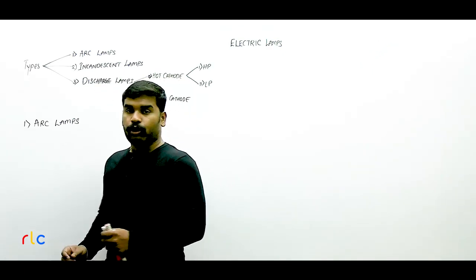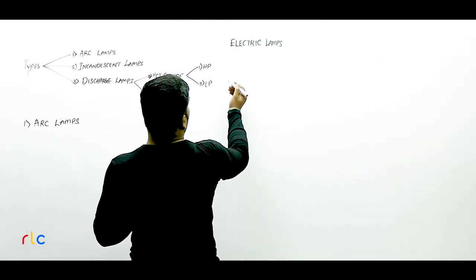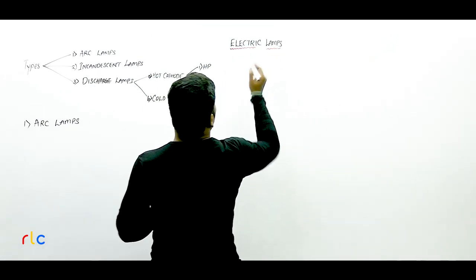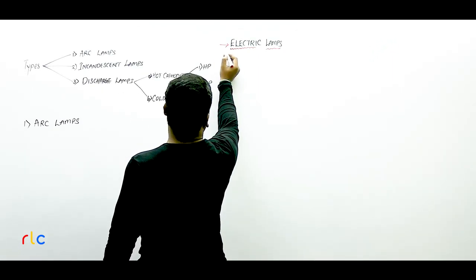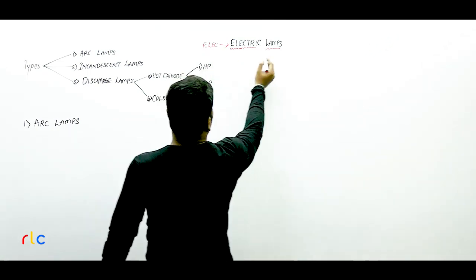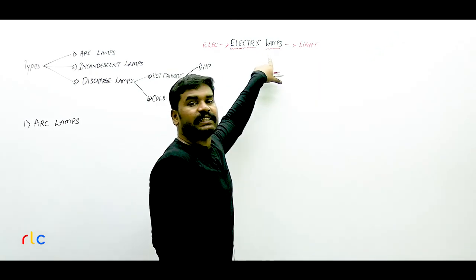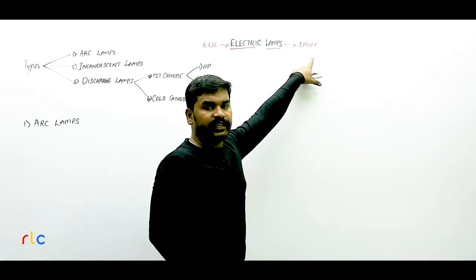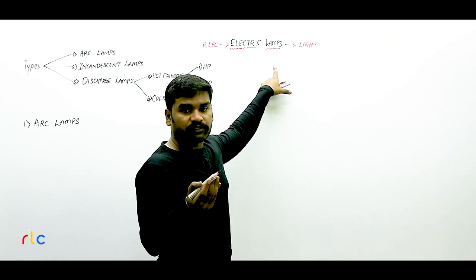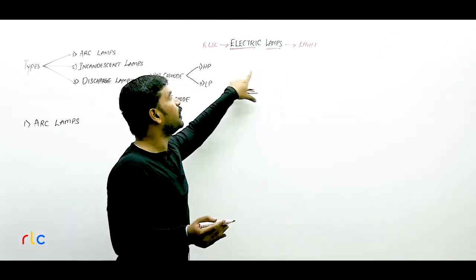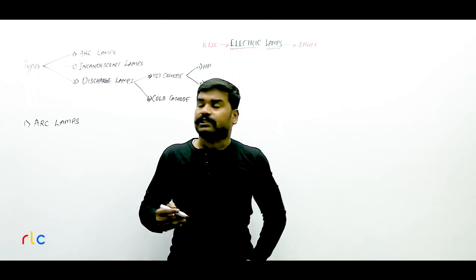Hi guys, this is Nikhil. In this video onwards we will start studying about types of electric lamps in this illumination course. An electric lamp is an energy converter — it is a device which takes electrical energy as input and provides light energy as output. A lamp is an artificial source of light, and if that artificial source of light works by taking electrical energy as input, then it is an electric lamp.